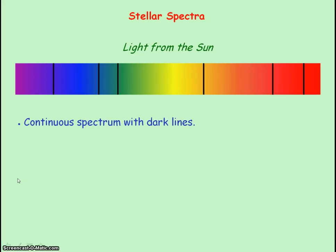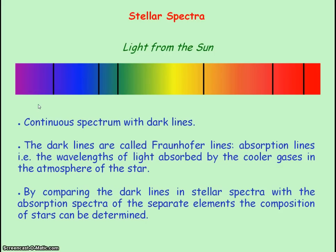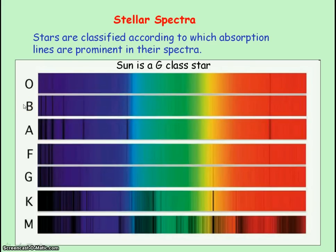Light from the sun is a continuous spectrum, but it has dark lines — so it is an absorption spectrum. The dark lines represent the absence of light: the wavelengths absorbed by the gases in the atmosphere of the sun. The dark lines in stellar spectra can be compared with the absorption spectra of separate elements to determine the composition of stars. Stars are classified according to which absorption lines are prominent in their spectra, and the sun is a G-class type of star.